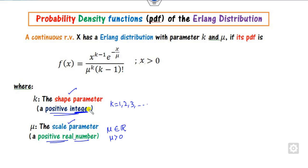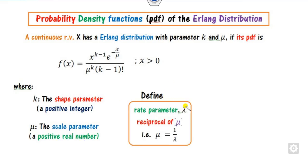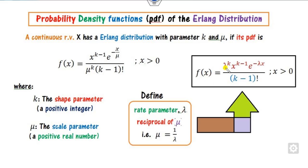We can also define another parameter called the rate parameter, denoted by Lambda, which is nothing but the reciprocal of the scale parameter, i.e., Mu = 1/Lambda. If you substitute the value of Mu, you can define a new PDF form. These are the two different forms of the Erlang distribution — one uses shape and rate parameters, the other uses shape and scale parameters.